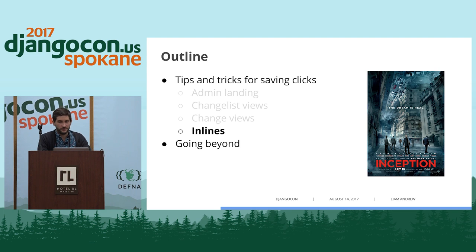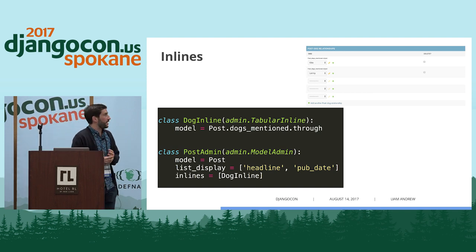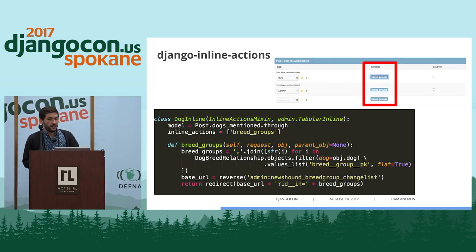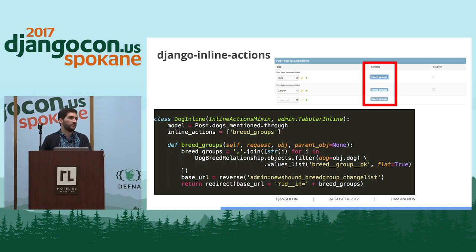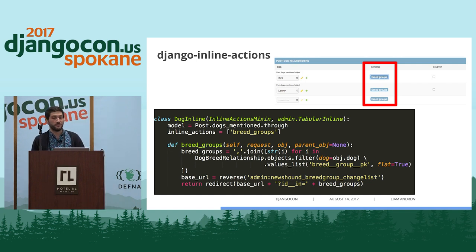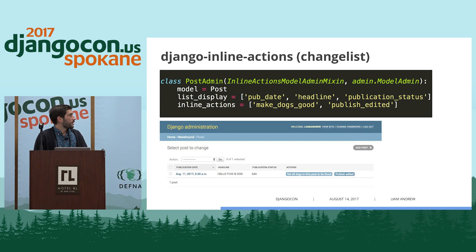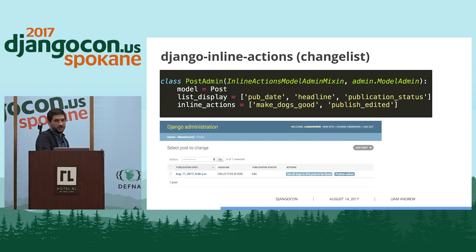Zooming further into inlines, we have a couple more packages. Django inline actions is another layer — where earlier we saw DjangoAdminRowActions letting you change specific items from the changelist, this lets you edit and process things from the inline view itself. You can also use Django inline actions in the changelist, which is kind of redundant with DjangoAdminRowActions, but good to know.